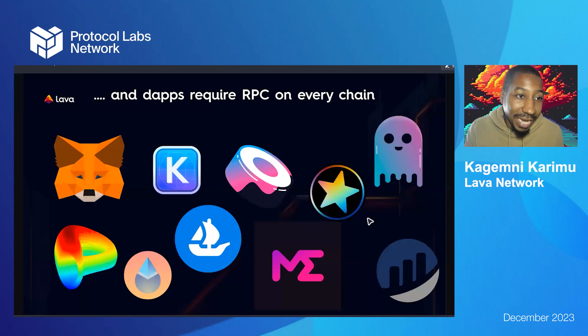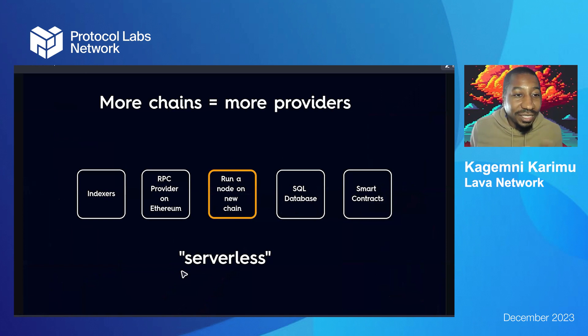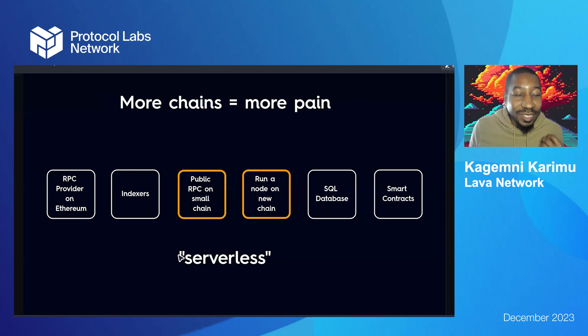As new chains pop up, dApps require RPC on every chain. There needs to be some way for these dApps to communicate with these chains. And because there are different chain architectures and different ecosystems, this has become kind of a mess and a difficult infrastructure problem to solve. So more chains means more RPC providers, means more people trying to spin up nodes on these new chains and provide services to people who are building dApps. This is the closest we're coming to serverless right now.